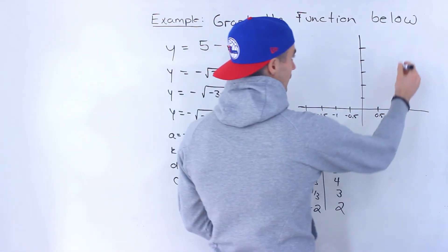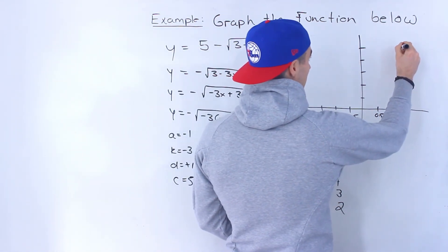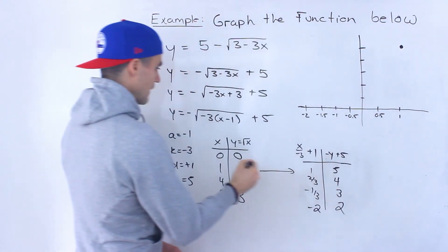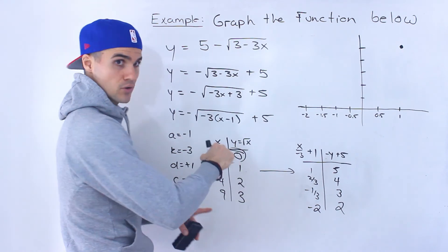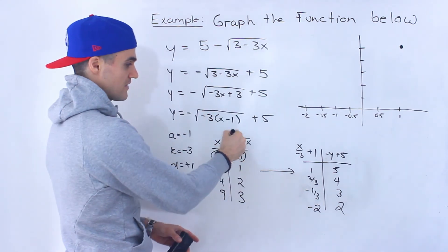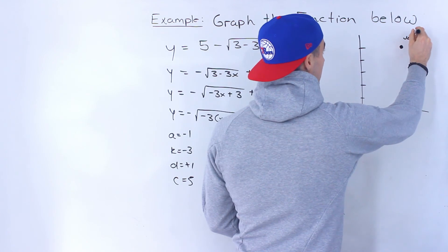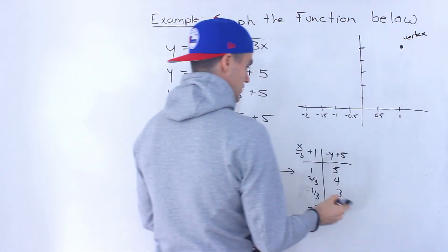So then we'll have 1 and 5, which would be up here. Now remember, the 1 and 5 is coming from the 0 and 0. Remember the 0 and 0, that's the vertex of that square root function. So we know this here is going to be the vertex.